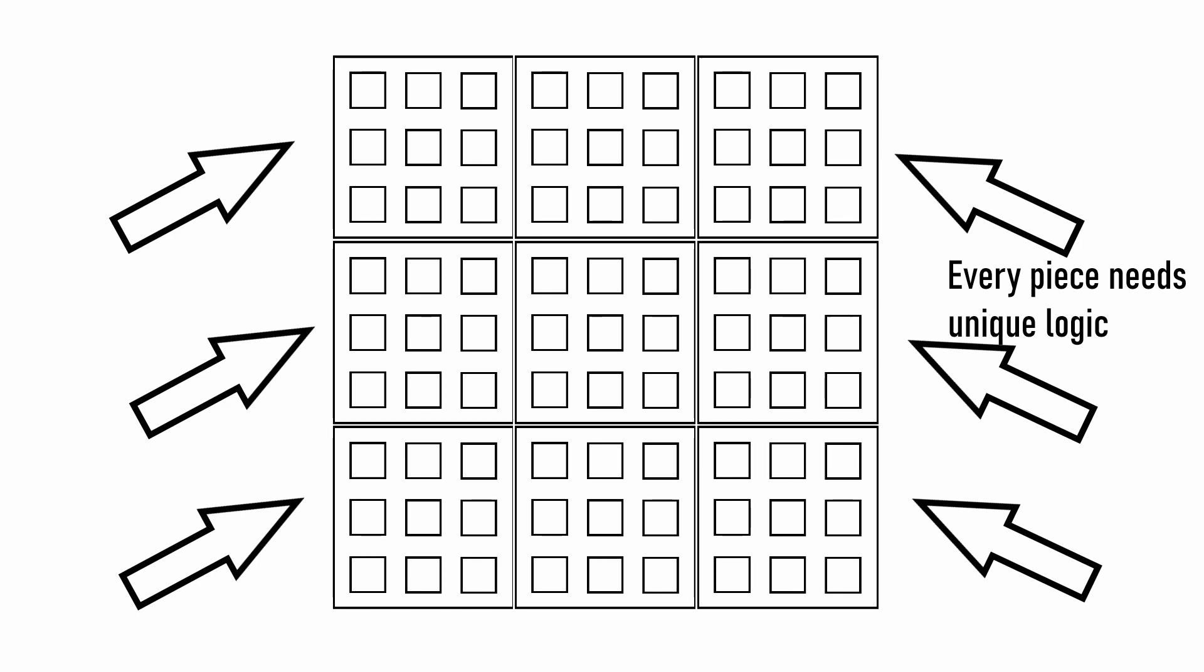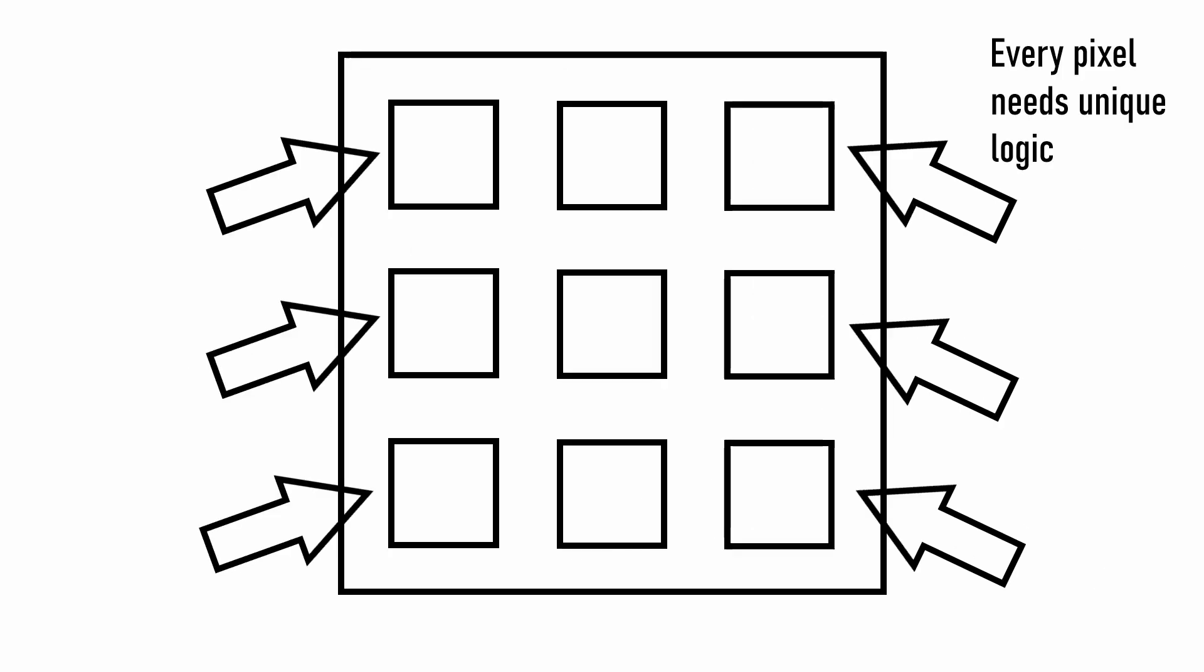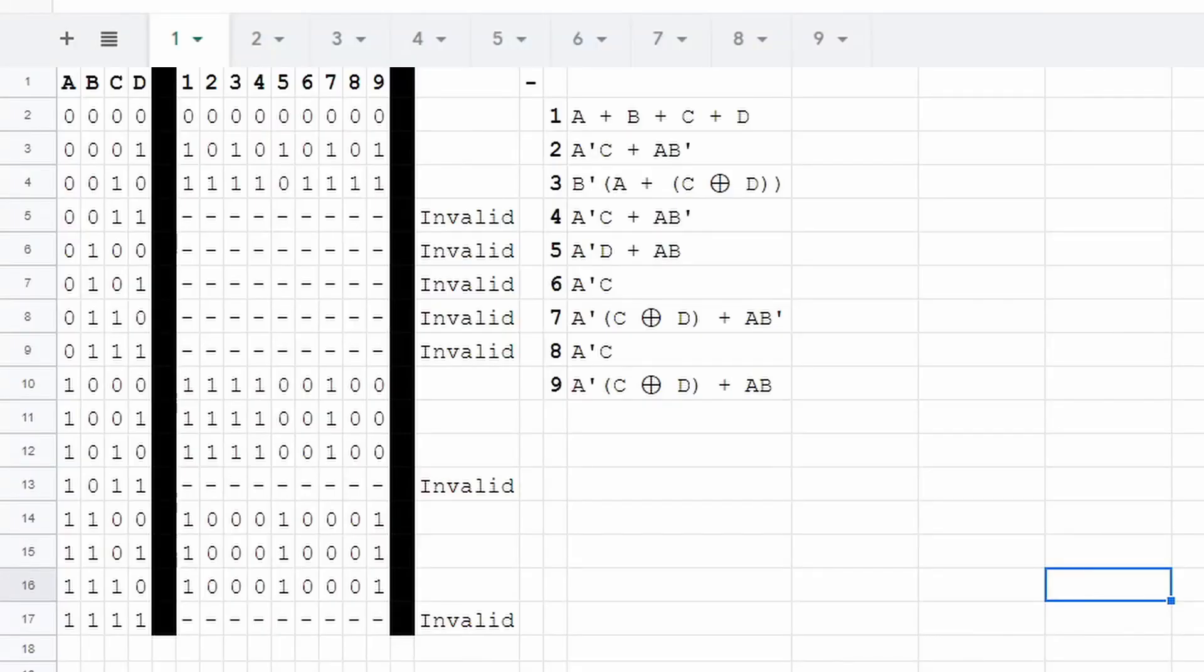The problem is that with each local board, all 9 pieces need unique logic. On top of that, each of the 9 pixels needs unique logic. This gets the total to 81 unique boards. Here, I finished all that up. You can see here each of the 9 pixels, and on the bottom, you can see each of the 9 local boards. This wasn't terrible, but it did take a few hours to knock out.